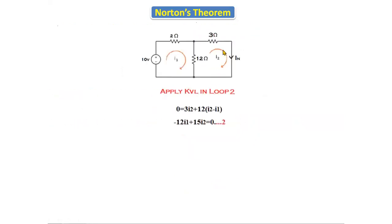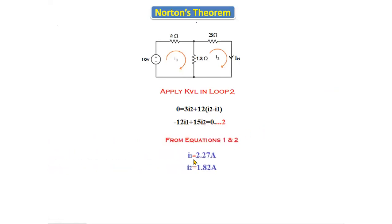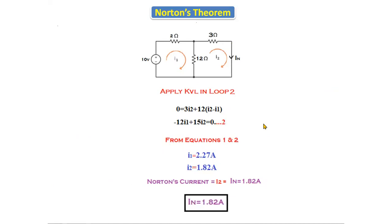Applying KVL in loop 2 — as there is no source here — 0 = 3·i2 + 2·(i2 − i1). Simplifying: −2·i1 + 5·i2 = 0. This is equation 2. Solving equations 1 and 2, we get i1 = 2.27 amperes and i2 = 1.82 amperes. The current passing through the short circuit branch is i2 = 1.82 amperes, so Norton's current I_N = 1.82 amperes.